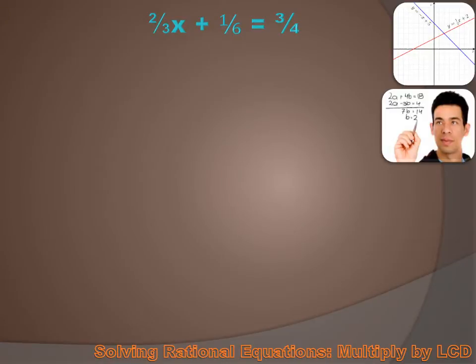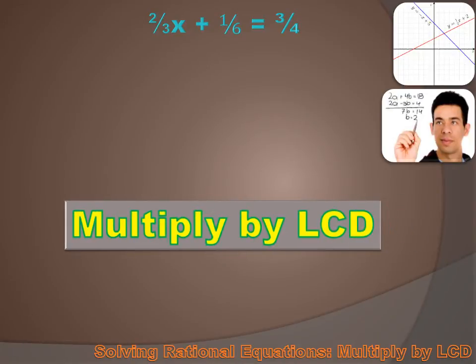Here's another rational equation we're being asked to solve, and it doesn't look exactly like the last one. It says 2 thirds x — but remember, we could rewrite this as 2x over 3, so it's a rational equation. We could solve it with cross products by moving the 1 sixth to the right side and subtracting from 3 quarters. But I promised I was going to teach you another way to solve rational equations — we're going to learn to solve them by multiplying each term by the lowest common denominator.